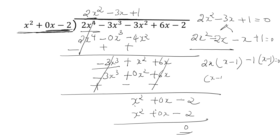So x minus 1 into 2x minus 1 is equal to 0. So x is equal to 1, or x is equal to 1 by 2. So the other zeros are 1 and 1 half.